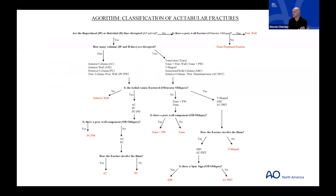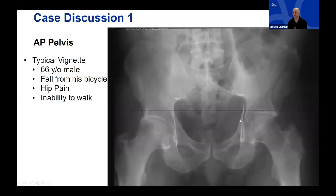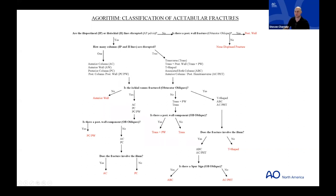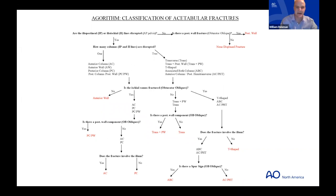Turning over to Will Reisman for the first case. This algorithm given to Will by his mentor Steve Simms looks busy but really boils down to five questions. It helps you pick out the most important things to figure out what's going on with the fracture and takes you from a two-dimensional image to a three-dimensional understanding.